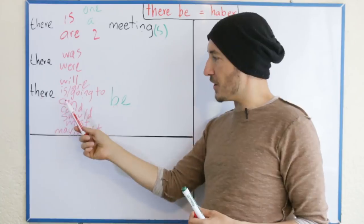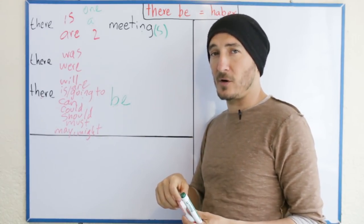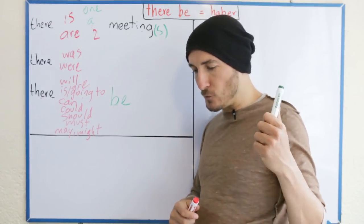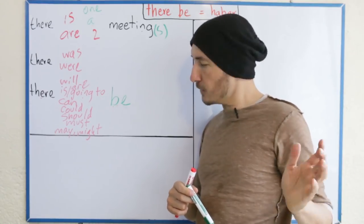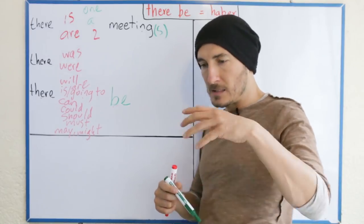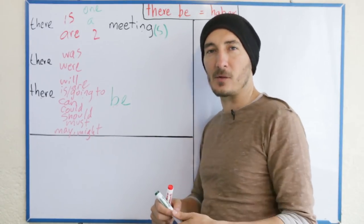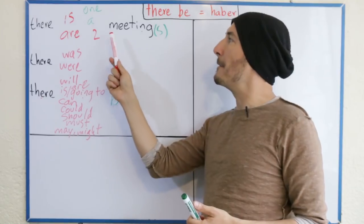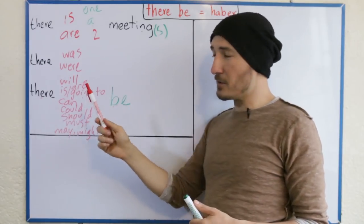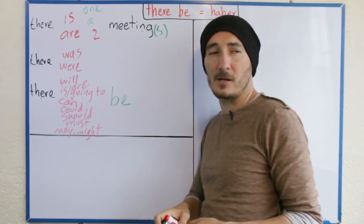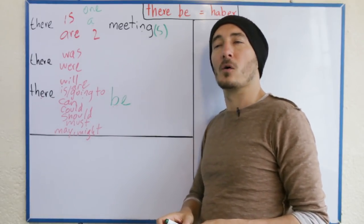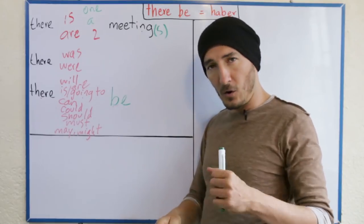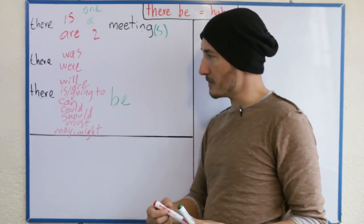Tiene que haber una reunión esta noche — there must be a meeting tonight. Recuerden que 'must' en este caso puede indicar posibilidad, pero más de conclusión: por tal y tal cosa, concluyo que tiene que haber una reunión esta noche. Pues si todo el mundo está con tantos nervios, tiene que ser esa la razón. De pronto haya una reunión esta noche — there may be a meeting tonight. Puede que haya dos reuniones — there may be two meetings.